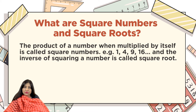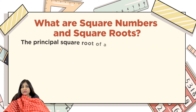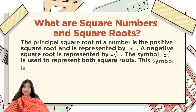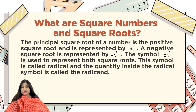The inverse of squaring a number is called the square root — the opposite of squaring a number is called the square root. The principal square root of a number is a positive square root and is represented by the radical symbol. A negative square root is represented by the negative radical symbol, and the plus-and-minus symbol is used to represent both square roots.